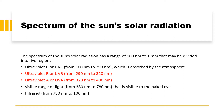The first is UVB, ultraviolet B, which ranges from 290 nanometers to 320 nanometers. And UVA, also known as ultraviolet A, which ranges from 320 nanometers to 400 nanometers.